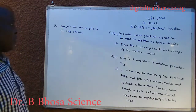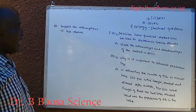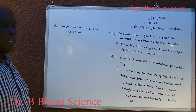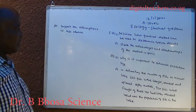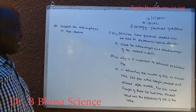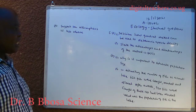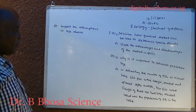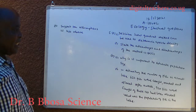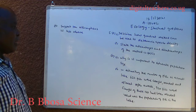Number five A, part one. Describe how the quadrat method can be used to determine the species density. Part two, why is it important to estimate population size?